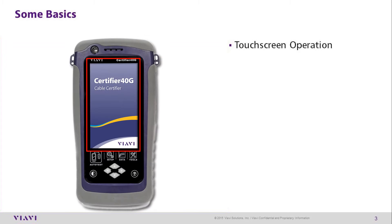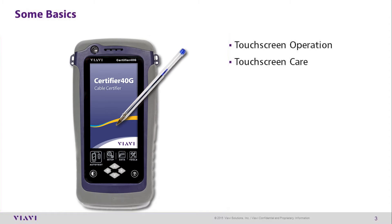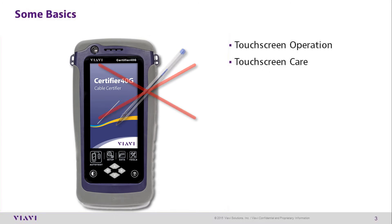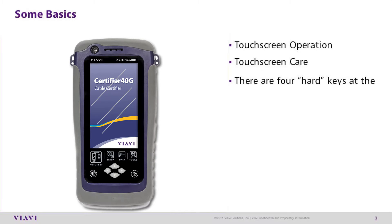The certifier has a touchscreen interface that can be operated by the attached stylus or other pointing devices. Although the touchscreen is made out of a strong polycarbonate material, you should never use a sharp instrument such as a screwdriver or pen on the touchscreen, as this may cause damage or scratches.